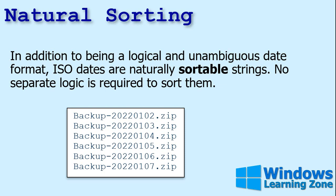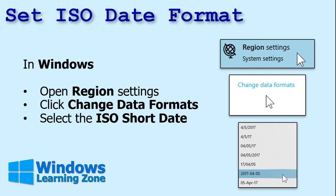In addition to being a logical and unambiguous date format, ISO dates are naturally sortable strings. You don't need any special logic or functions to sort files that have these as backup file names, for example — they just sort naturally. If you use month-day-year or even day-month-year, you can't naturally sort that. To set the ISO date format in Windows, go to regional settings. In Windows 10 — and I'm pretty sure in 7 and 8 as well — go to regional settings, change data formats, and then select ISO short date.